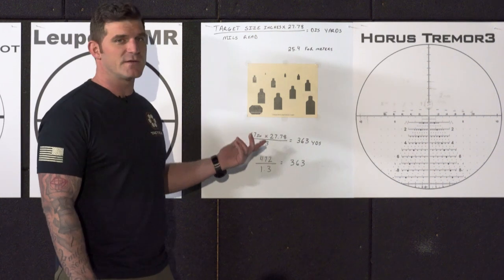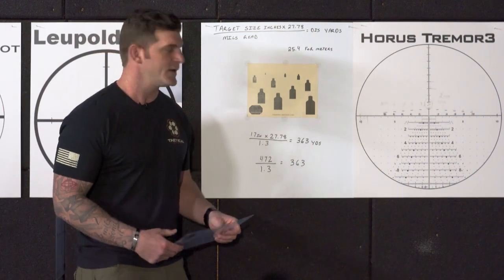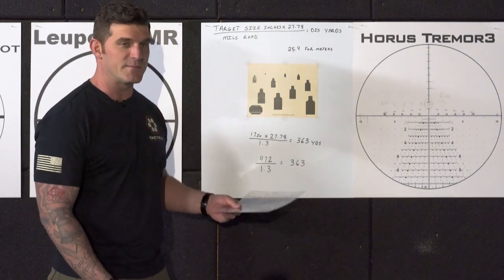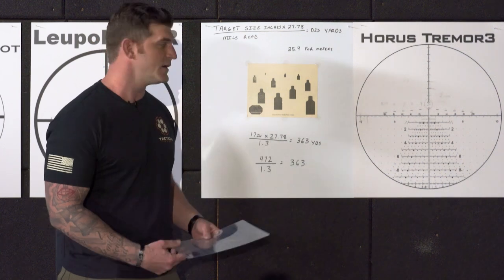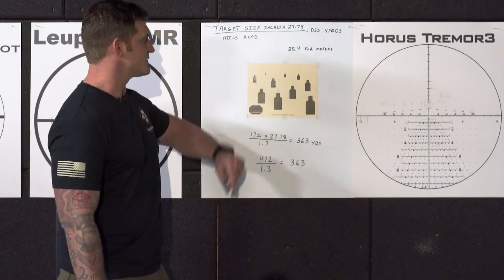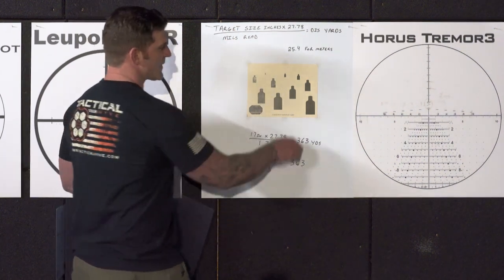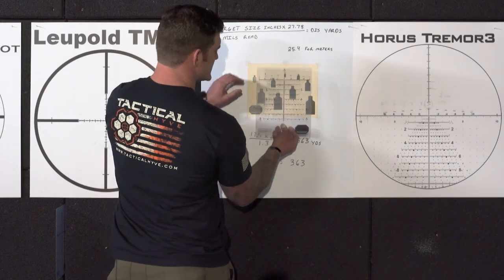So for the target example I'm going to use we're going to call it 17 inches wide, from shoulder to shoulder. So whenever I go on mill or measure this target using my reticle I'm going to use 17 inches for this target size in inches. So we use this target for our first example here.